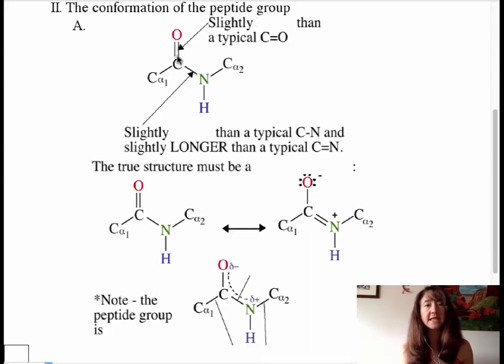Remember the C double bond O, bond N, bond H? This right here, the C bond N, is the peptide bond. So the peptide group is actually defined as those atoms involved in the peptide bond.